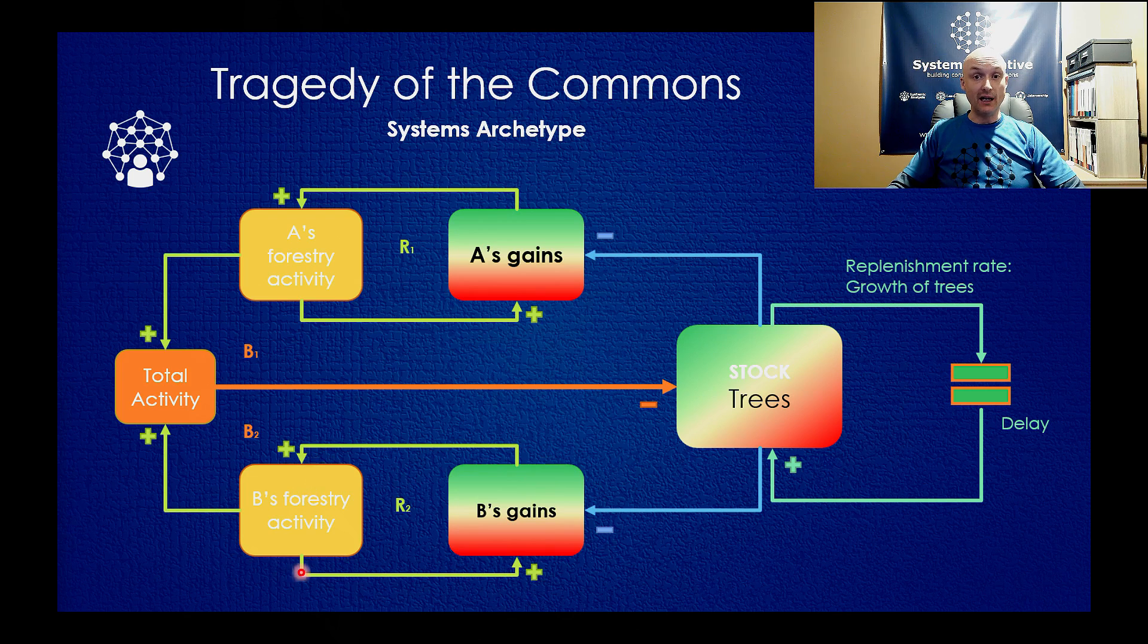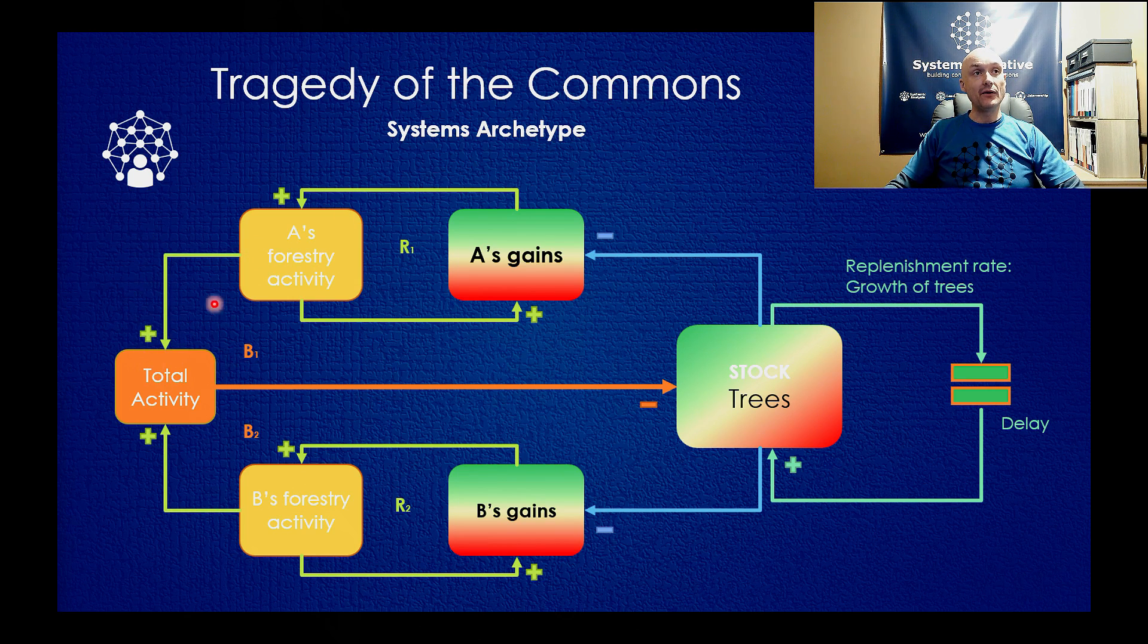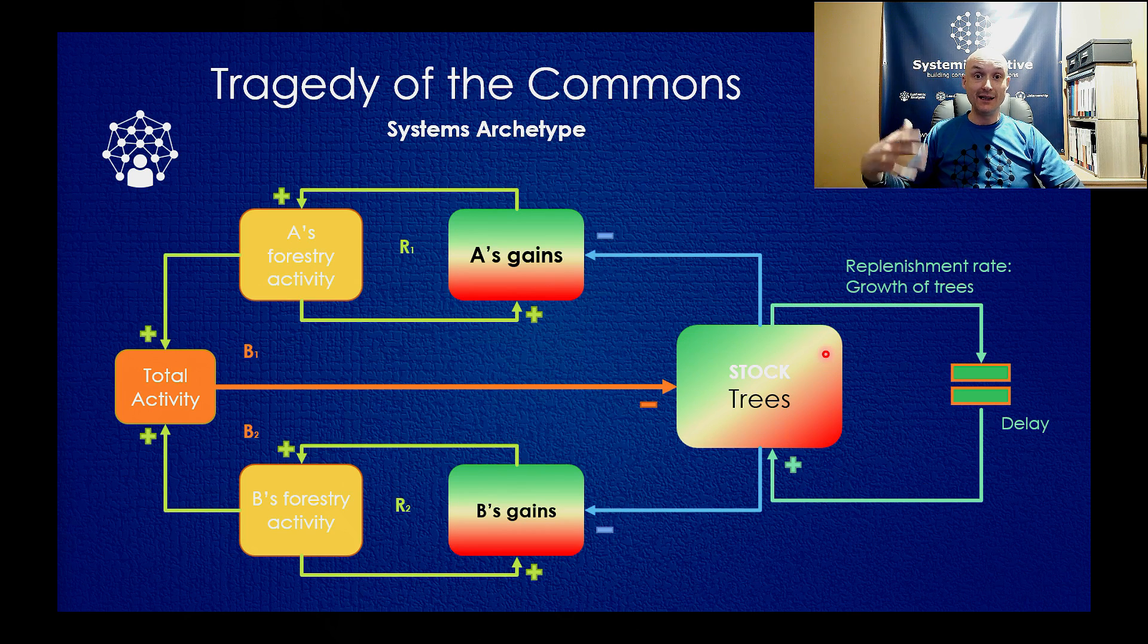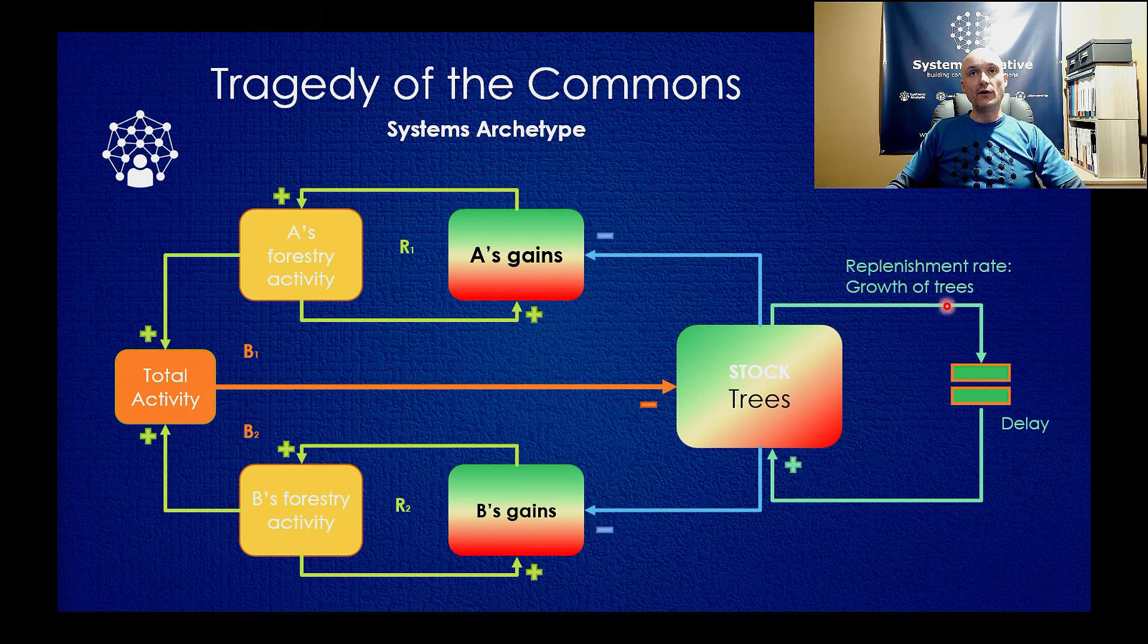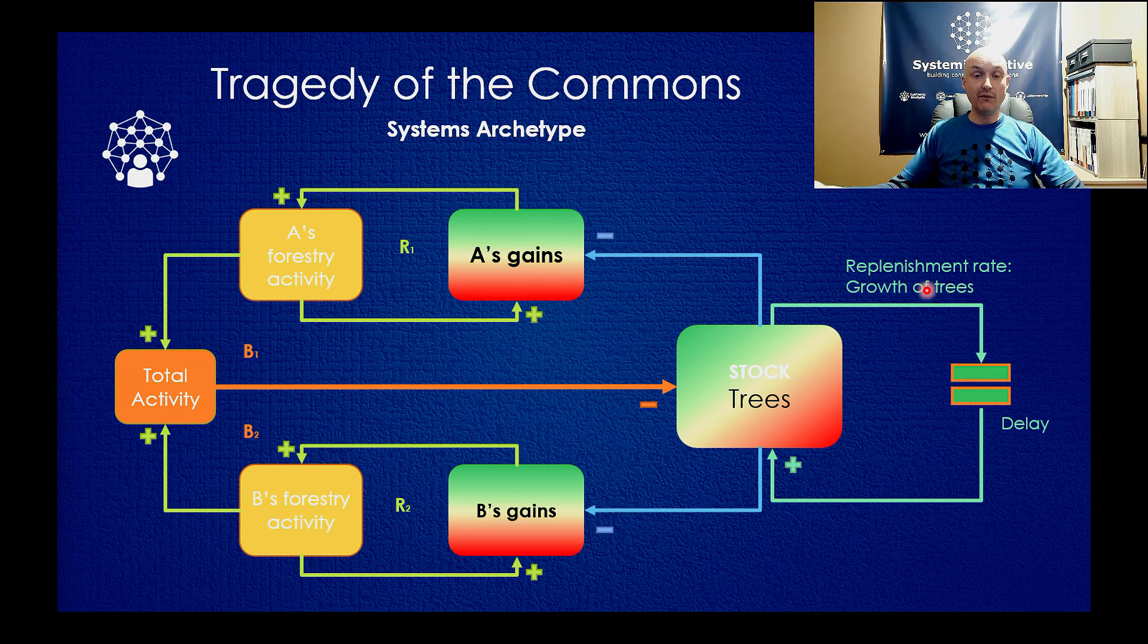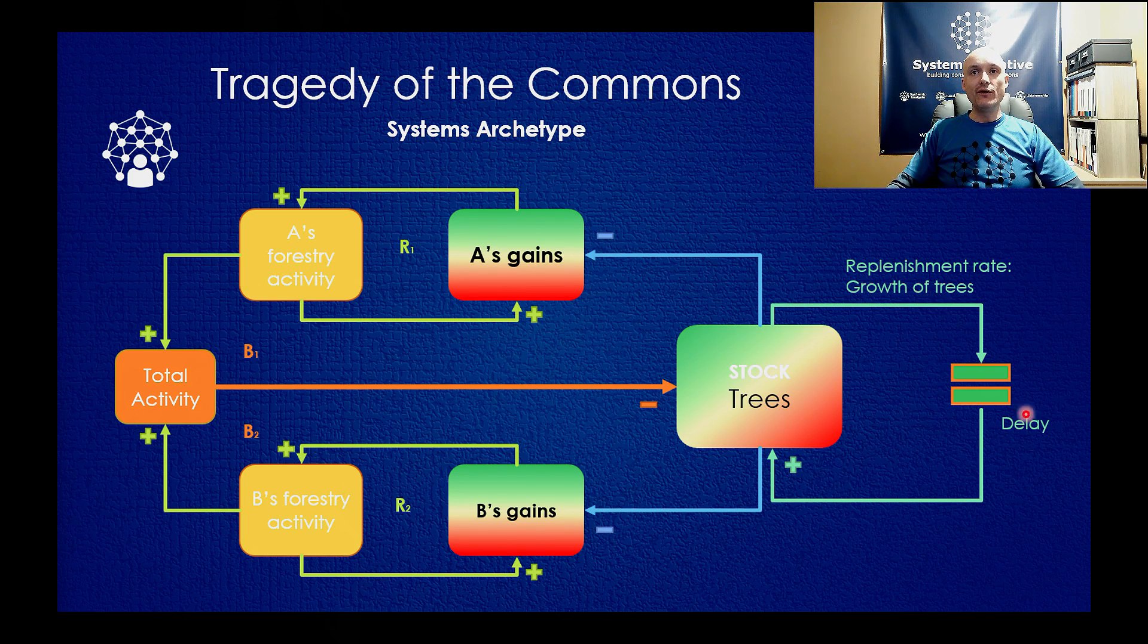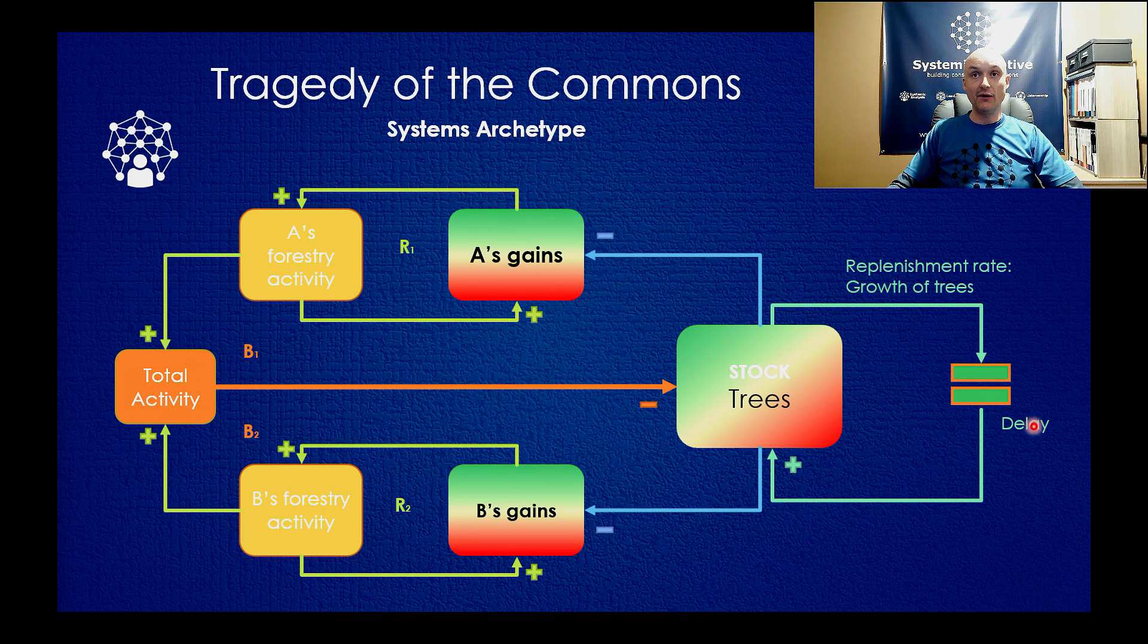And company B is operating in exactly the same way. Now, they can carry on indefinitely, other than the fact that both of their activities, company A and company B, adds to the total activity. And that's the total activity in this area of forest. And what that total activity does, no surprises, is if we follow the arrow, it reduces the stock of trees. So this is the stock in the system, the trees, and it's being reduced by the activity of company A and company B. Now, this is very similar to limits to growth, and the stock of trees is the limit, the limiting factor in this system's archetype. But what we've got here is a stock which naturally replenishes itself.